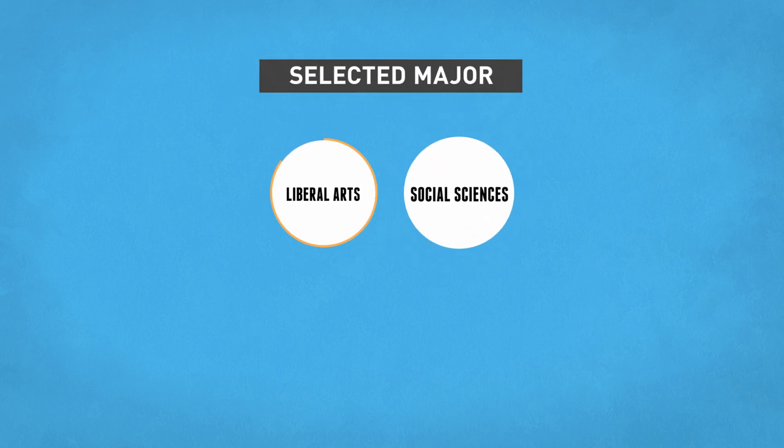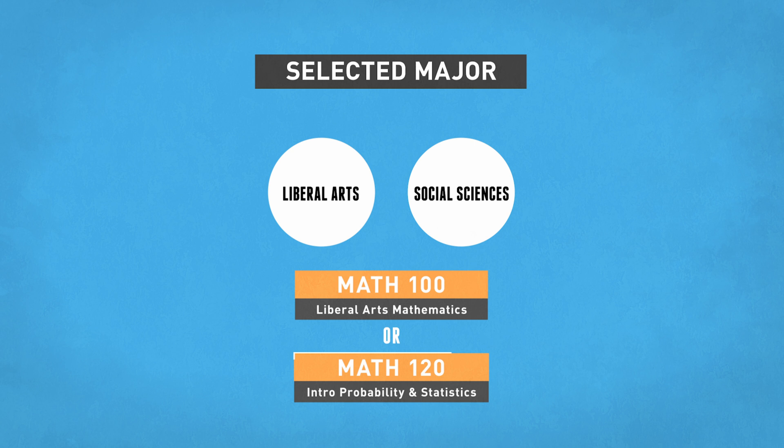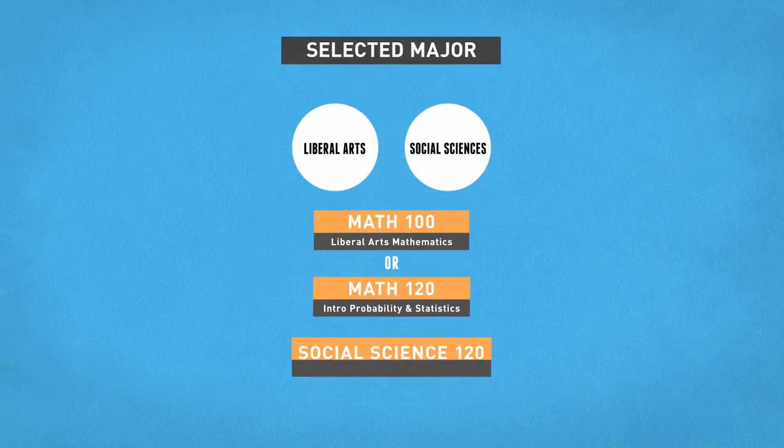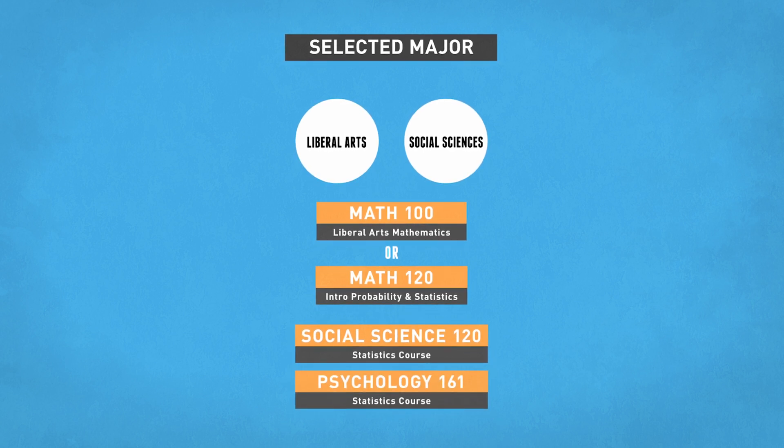Liberal Arts or Social Science majors will take either Math 100 or Math 120 in order to transfer. Some Psychology or Social Sciences majors may have to take Soc 120 or Psych 161, which are statistics courses specific to these fields of study.